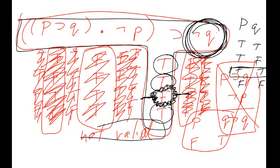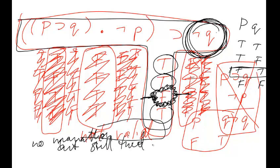So denying the antecedent says: if I run a marathon, I'll be tired; I didn't run a marathon, therefore I'm not tired. But in the third case, you didn't run the marathon but you're still tired — no marathon, but still tired. The truth table gave us the counter-example we were looking for. We'll do more examples as we go on.